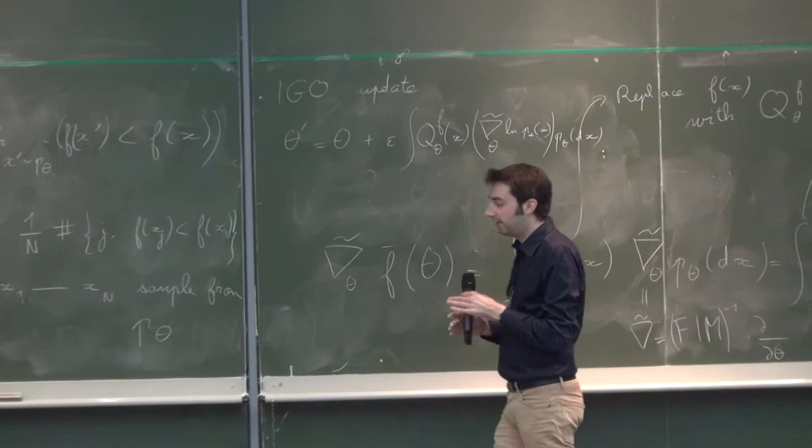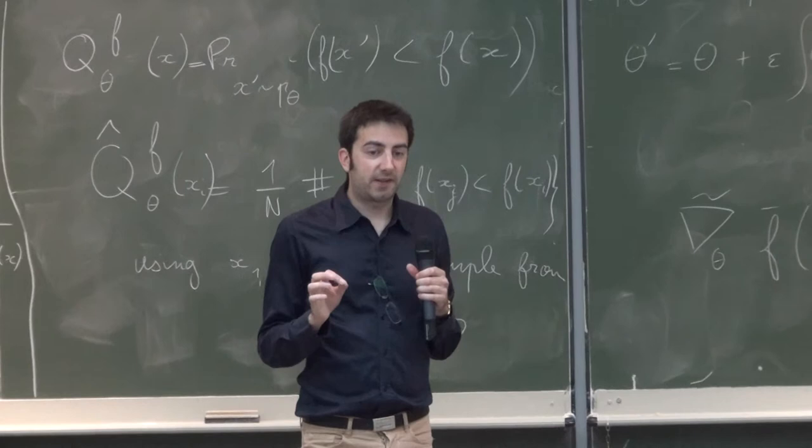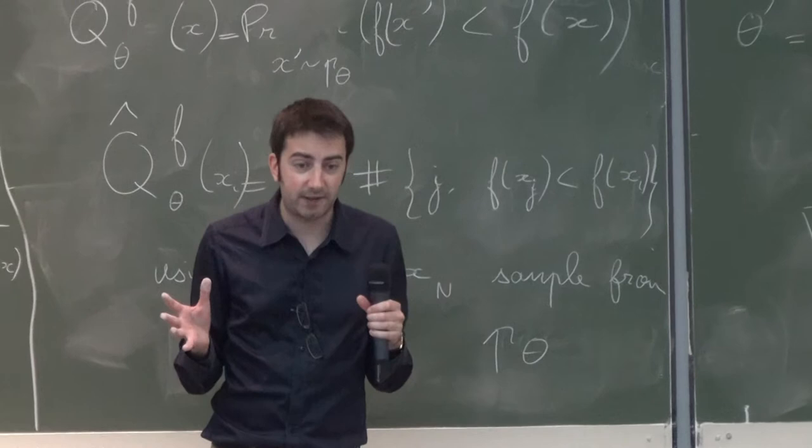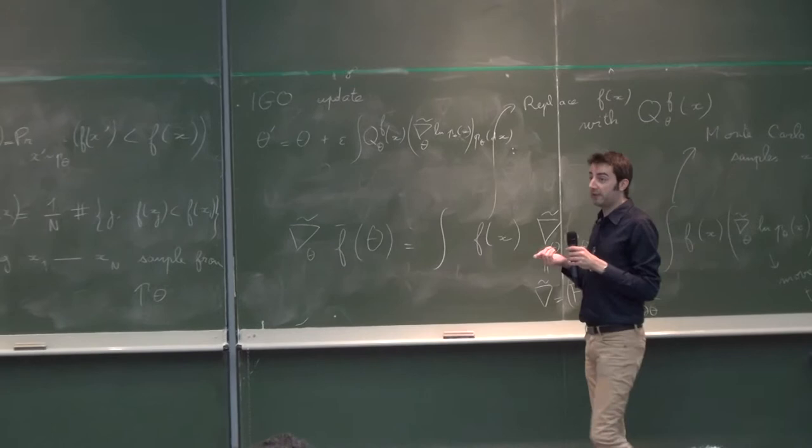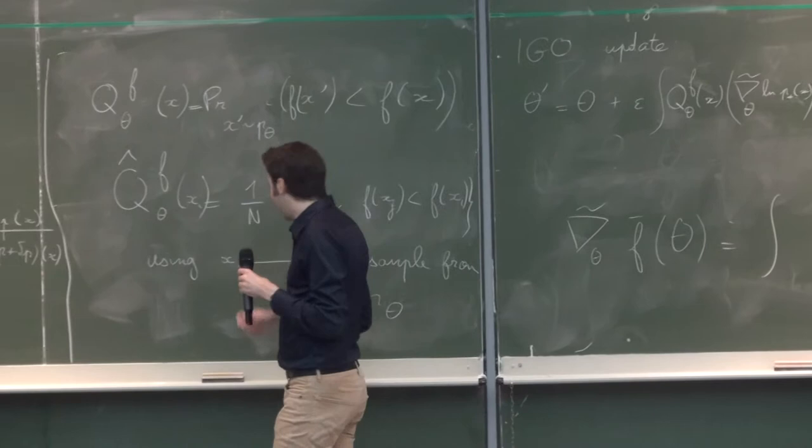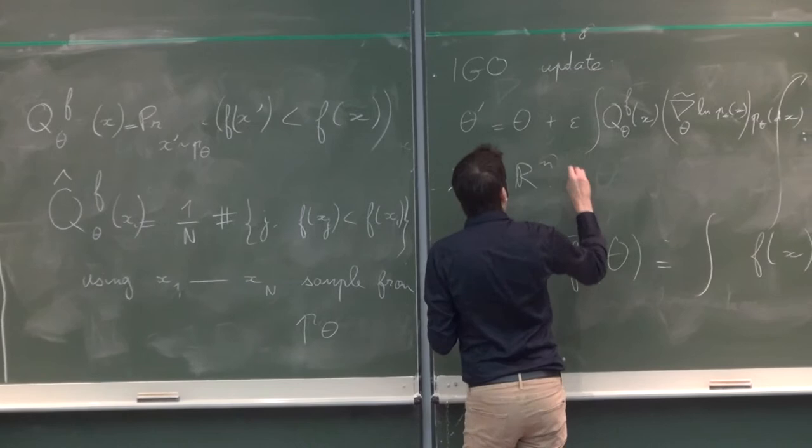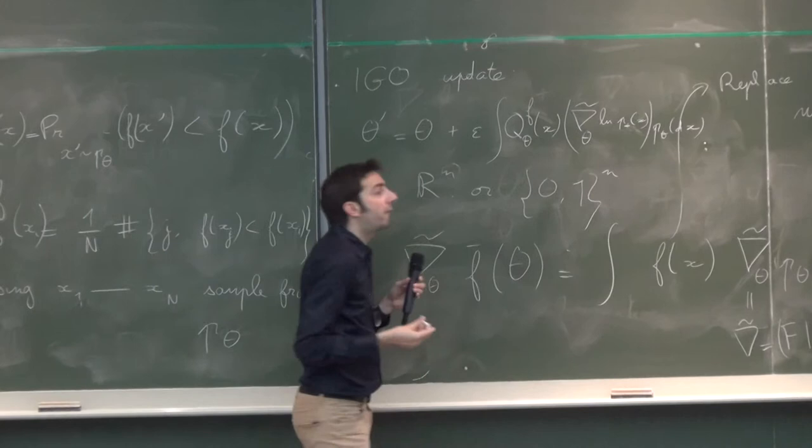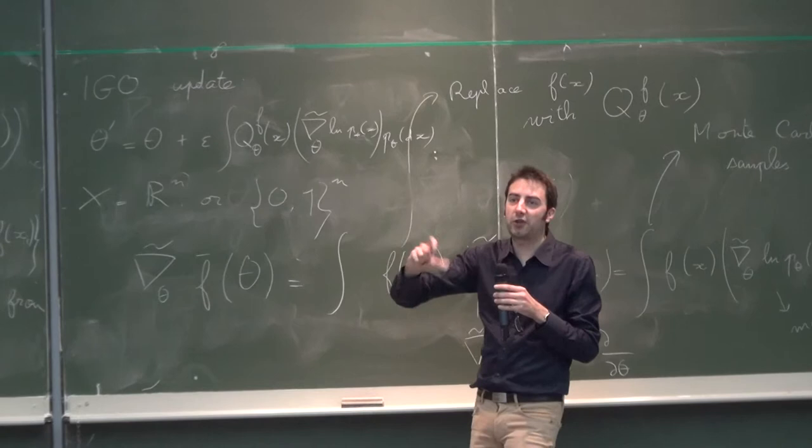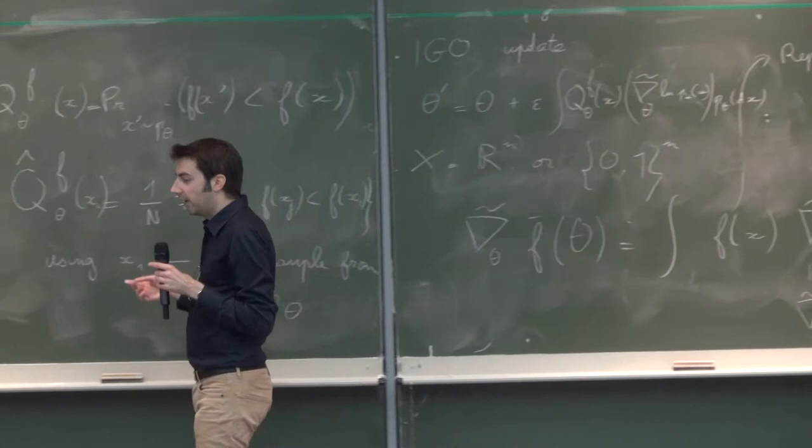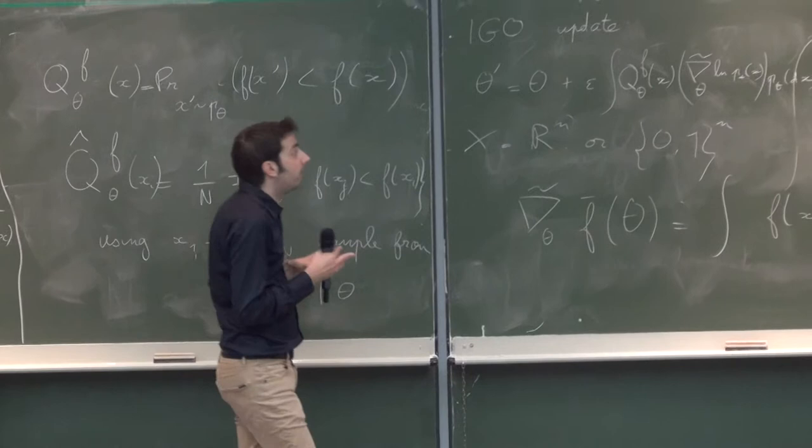And what is interesting is, so now you have from any search space X and any family of probability distributions of the search space X, you get a searching algorithm. It doesn't depend on whether the space x is discrete or continuous. For example, you can use this with x equals R^n or x equals discrete space, and the other thing you need is to define a family of probability distributions on your space.